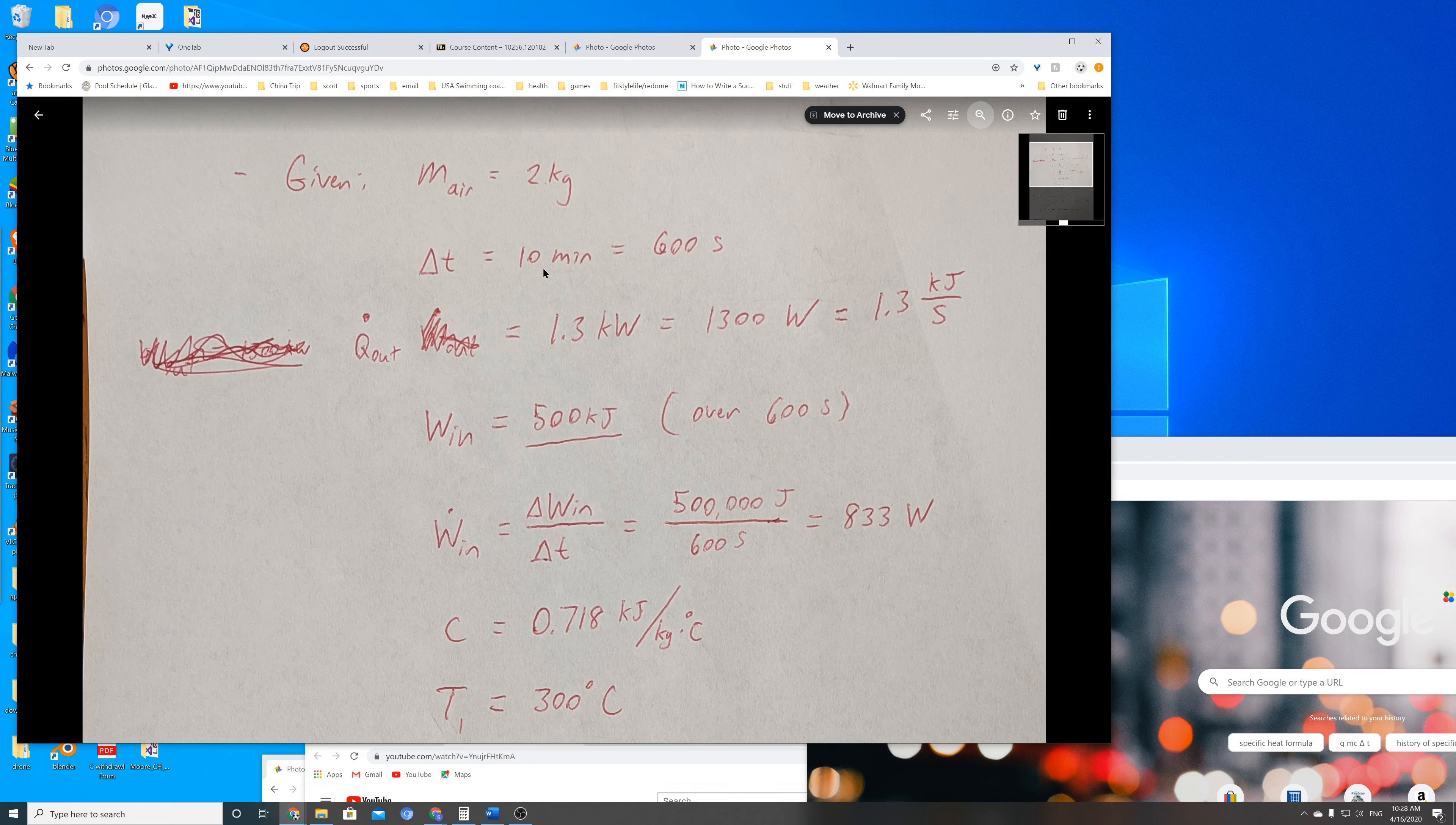The time is 10 minutes, which is 600 seconds. I wrote it in seconds because our units are going to be in terms of joules per second. The next thing is the rate at which heat is leaving the system, which was 1.3 kilowatts.